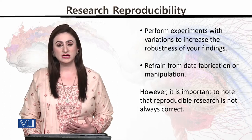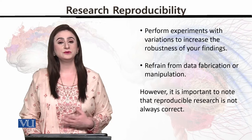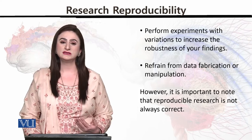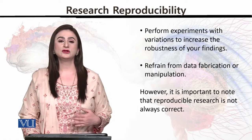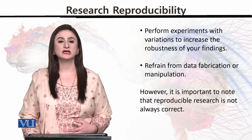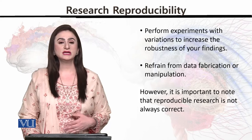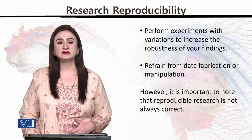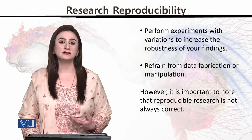However, it is important to note that reproducible research is not always correct. It is very surprising to say that whenever research is reproduced it would have similar results to the original — but this is not correct. When we change the norms or change the testing conditions, our research results can be different, which means what was assumed in the first research may not be correctly reproduced.